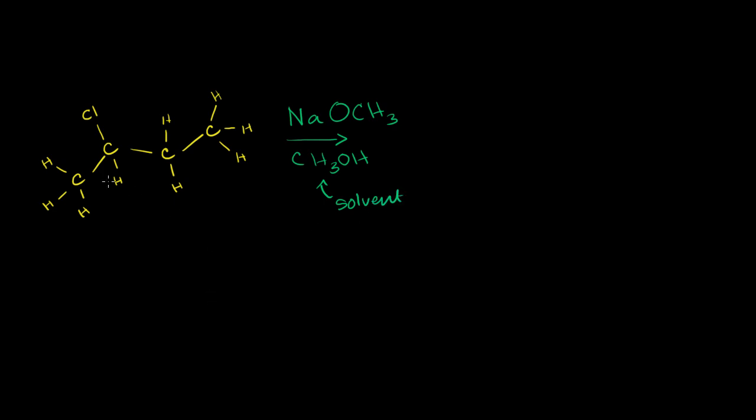Just so we get a little practice of naming, let's see. This is one, two, three, four carbons. So it has bute as a prefix. No double bonds or triple bonds, so it is butane. And we have a chloro group here. So if we start numbering at the side closest to it, one, two, so it's two chloro. This is 2-chlorobutane.